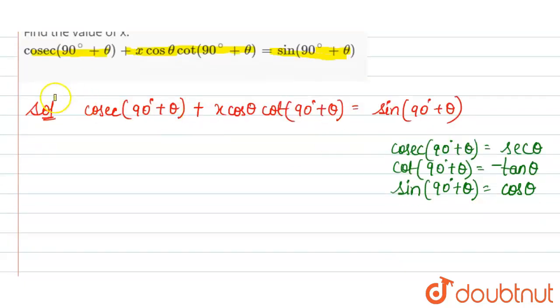So in place of cos(90° + θ) we write −sec θ, in place of cot(90° + θ) we write −tan θ, and in place of sin(90° + θ) we write cos θ.